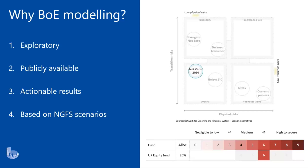Another key reason we think the Bank of England data was a good starting point is that it's publicly available, meaning the underlying assumptions and models we are using can be publicly scrutinised. We think that a transparent approach to modelling is very important, especially at this early stage of scenario modelling where everything is still very much in its infancy and there are a lot of issues still to be worked through within the modelling process.